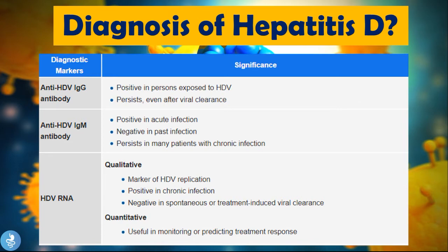The blood test is the most essential component to diagnose hepatitis D. We can look for anti-HDV IgG antibodies, which are positive in persons exposed to HDV and can persist even after viral clearance. Anti-HDV IgM antibody is positive in acute infections and may persist in many patients with chronic infection. HDV RNA is a marker of HDV replication — it is positive in chronic infection and negative in spontaneous or treatment-induced viral clearance, and can be used to monitor treatment response.